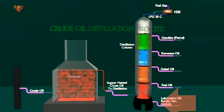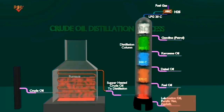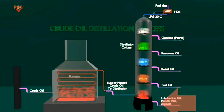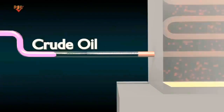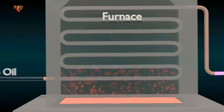At the lowest end of the column, products including asphalt, power generation fuel, and marine fuel are produced.